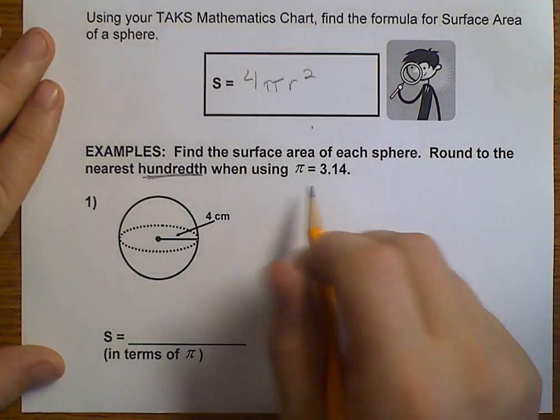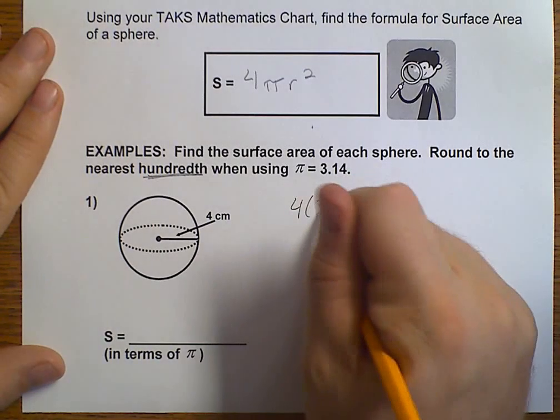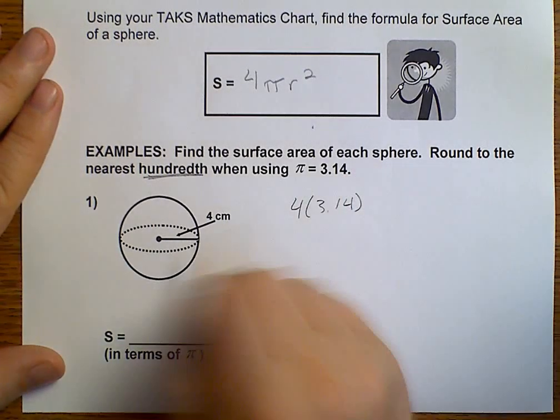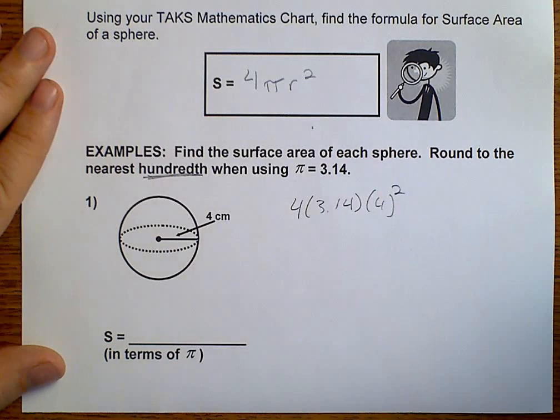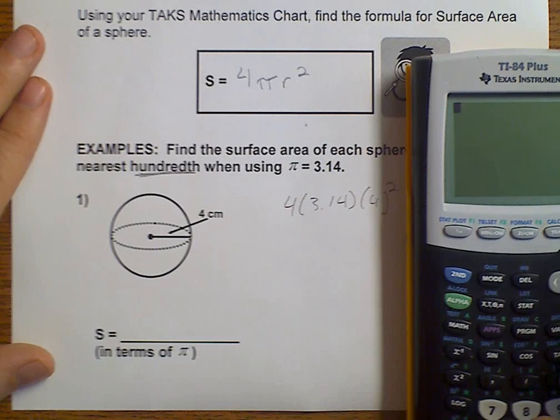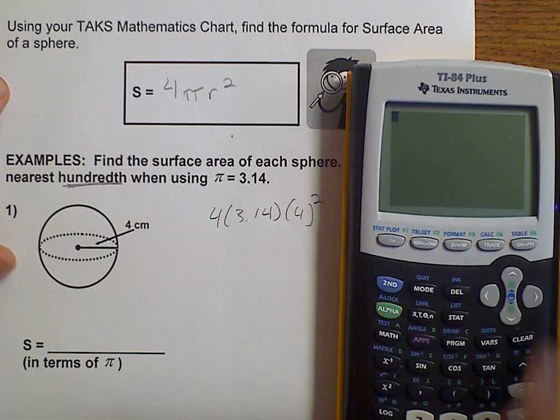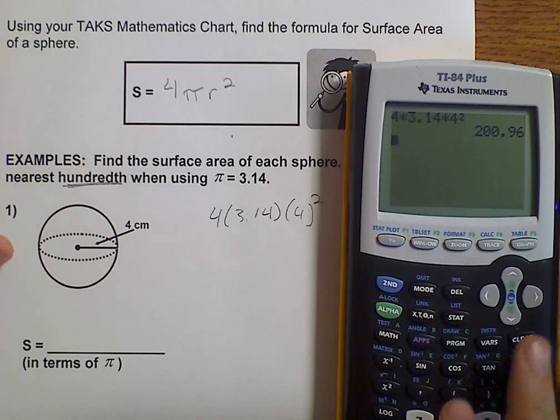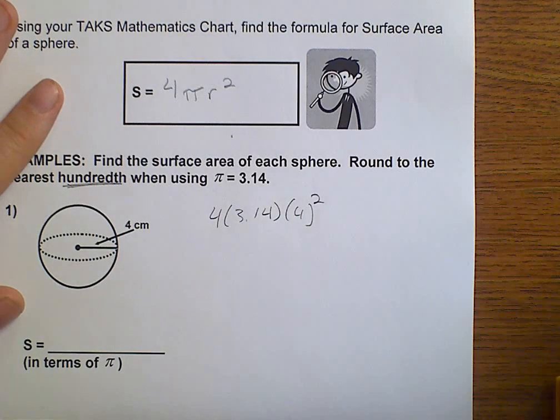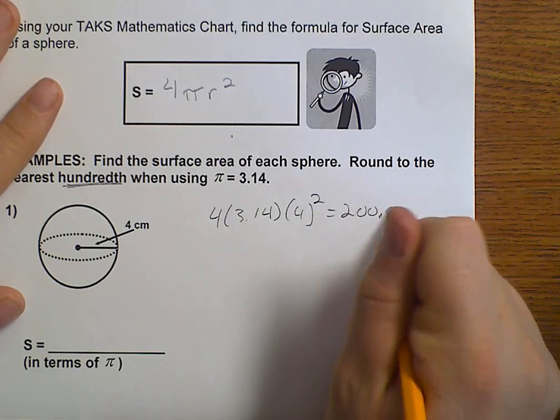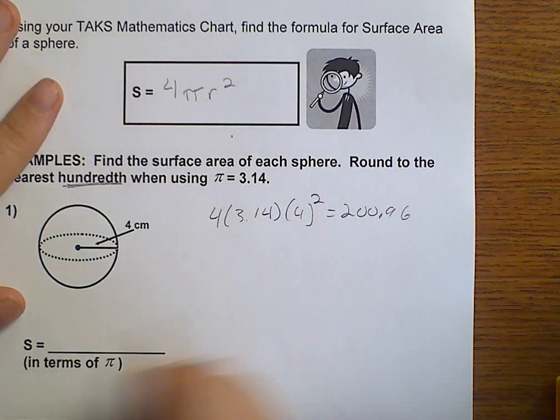So, we need 4 times 3.14 times our radius of 4 squared. So, we do 4 times 3.14 times 4 squared. Gives us 200.96, which is 201.